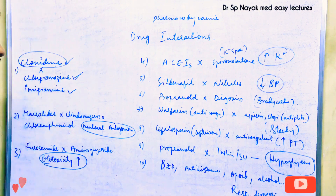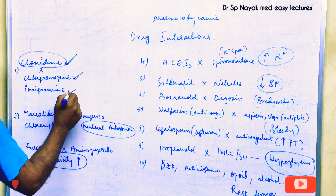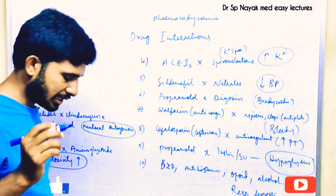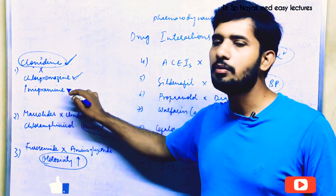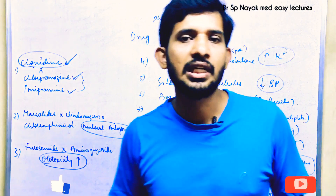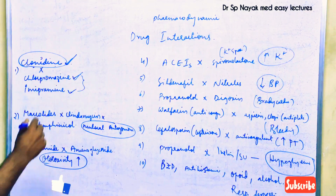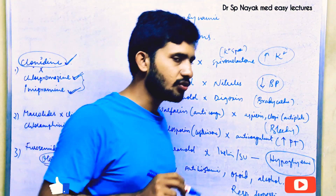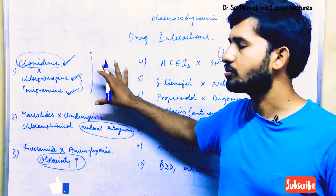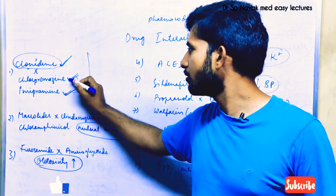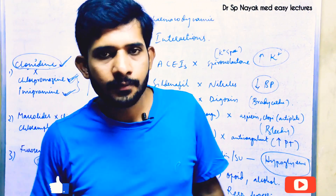The first commonly seen pharmacodynamic drug interaction is clonidine with chlorpromazine and imipramine. Clonidine is a centrally acting anti-hypertensive drug. When clonidine is given along with chlorpromazine or imipramine, these drugs will reduce the centrally acting activity of clonidine and stop its anti-hypertensive action. So while prescribing clonidine, we must ensure chlorpromazine and imipramine are not given together with it.